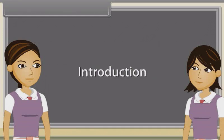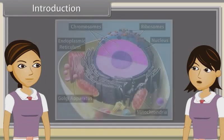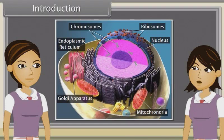Hey Ankita, we have discussed the structure of the endomembrane system, endoplasmic reticulum, Golgi apparatus, lysosomes, vacuoles, mitochondria, plastids and ribosomes.